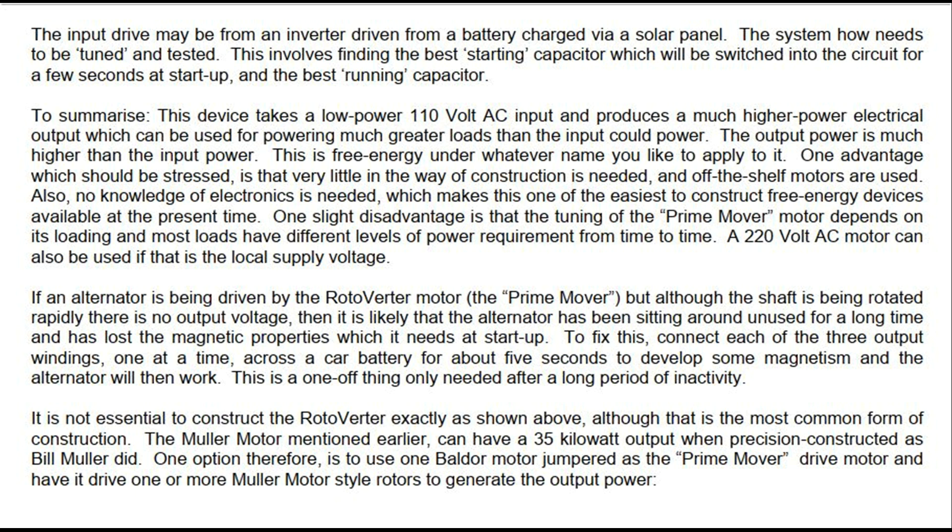It is not essential to construct the Rotoverter exactly as shown above, although that is the most common form of construction. The Muller motor, mentioned earlier, can have a 35-kilowatt output when precision constructed as Bill Muller did. One option therefore is to use one Baldor motor jumpred as the prime mover drive motor and have it drive one or more Muller motor-style rotors to generate the output power.